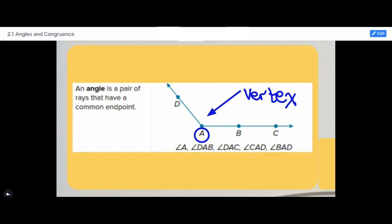We can either name the angle by the vertex A, so we can say angle A, or we can name it by two points on both sides and the A is in the middle also because this is the vertex. So we can say angle DAB or DAC or CAD or BAD.